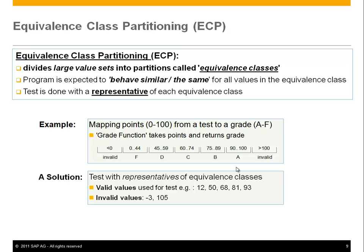Very simply: you pick one representative for each equivalence class and then make sure that each of those target output values — A, B, C, D, F — is delivered correctly. For instance, you can pick some middle representative values like 12, 50, and so forth, and then say you've done the test with a representative of that equivalence class.